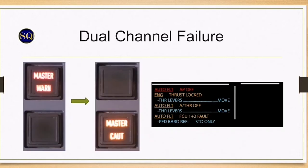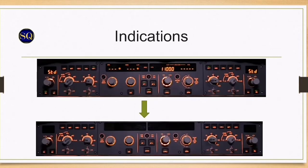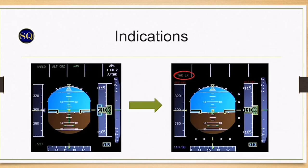In case of a dual channel failure, when both channels have failed, the ECAM gives a master warning due to the autopilot failure followed by a master caution. The ECAM displays as below. All controls and indications on the FCU are lost. Both autopilot and the autothrust are lost.